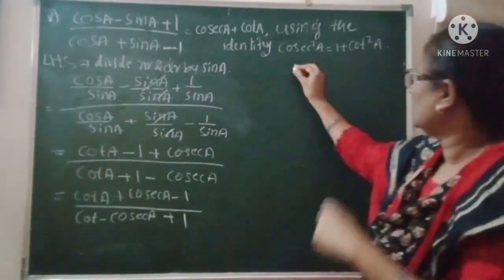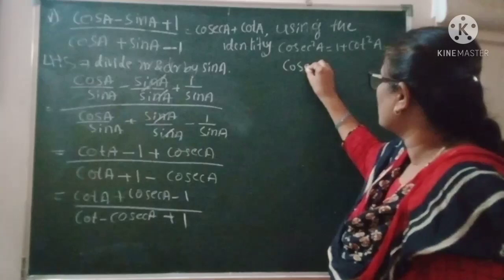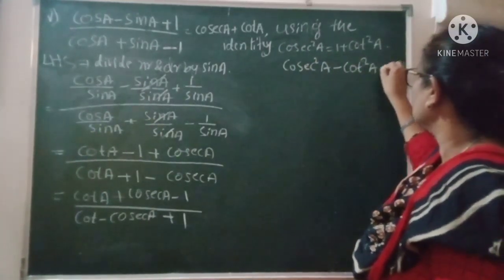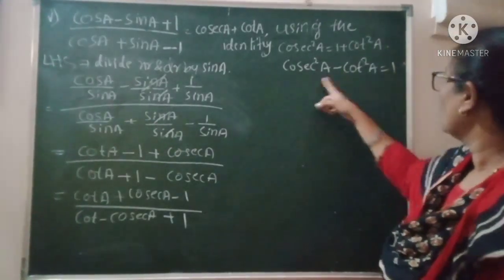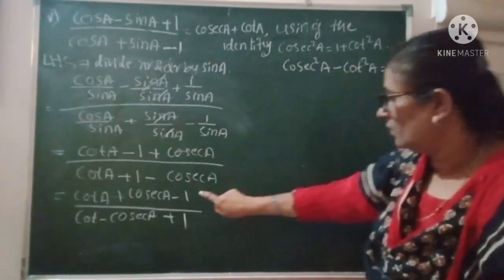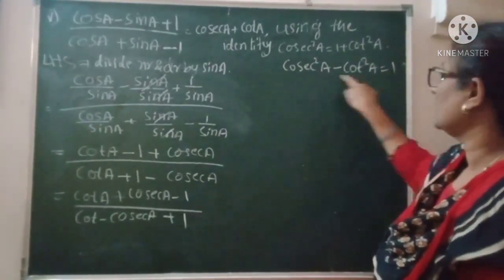This uses cosec² A = 1 + cot² A. Here we go. Cosec² A minus cot² A = 1.